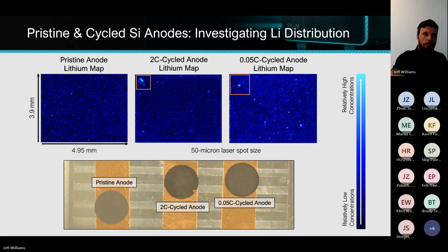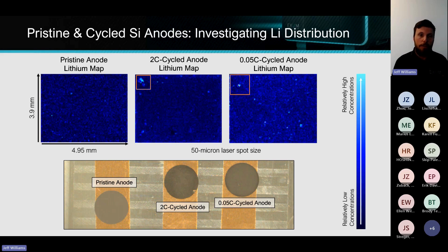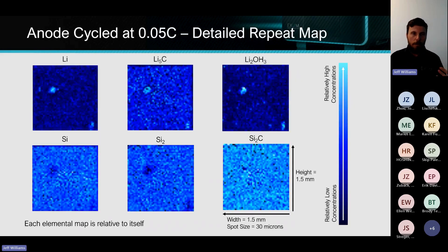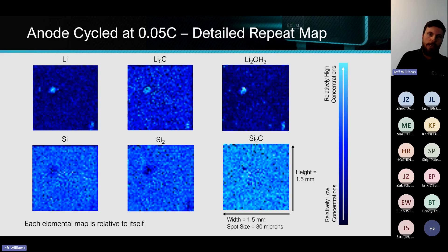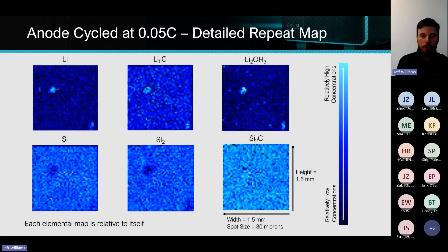For scale, every spot size here is 50 microns. If we zoom in to a 30-micron scale, we can see that the average particle size is maybe 100 microns or so for the very slow 0.05C charge rate anode. And we don't see much of a hole in the silicon — we haven't gotten full removal of silicon or fully plated all the way through to cause a short circuit.